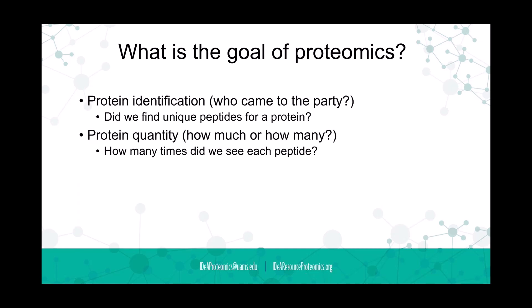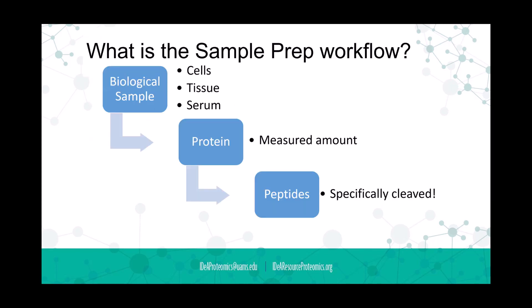The goal of proteomics is protein identification — we want to know who came to the party, what proteins are actually being expressed. We might have lung tissue, brain tissue, cell culture, or serum from a patient's blood sample. To determine protein identity, we ask: did we find unique peptides from that protein? And for protein quantity — how much of each protein did we find — we look at how many times we saw each peptide and what the actual signal of those peptides was, given the dynamic range we can deal with.